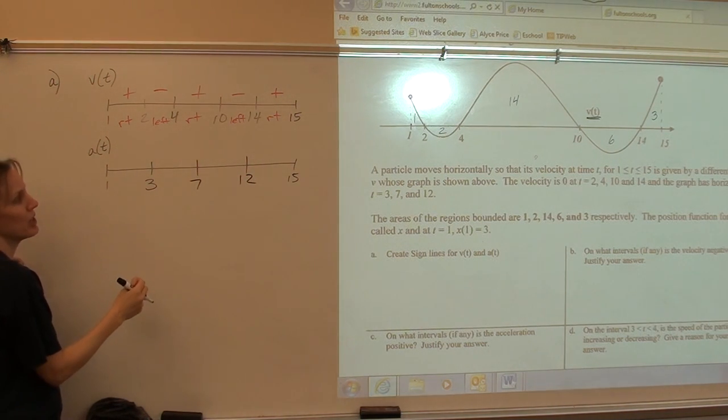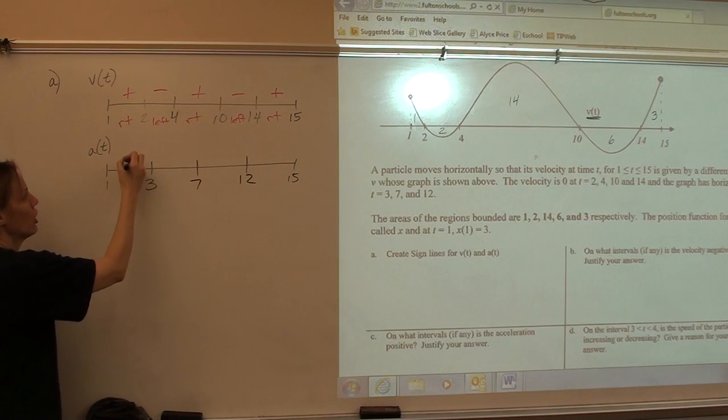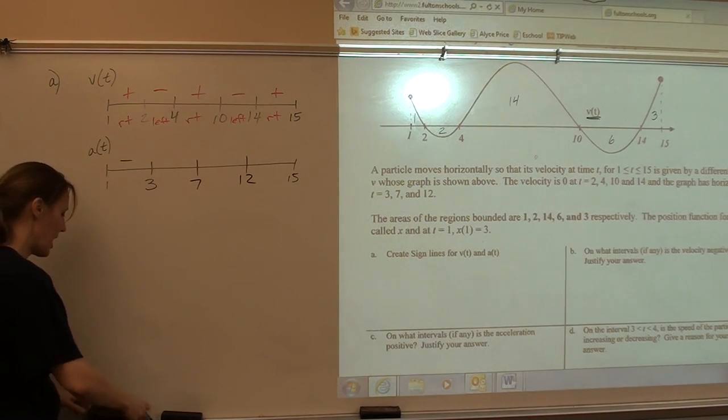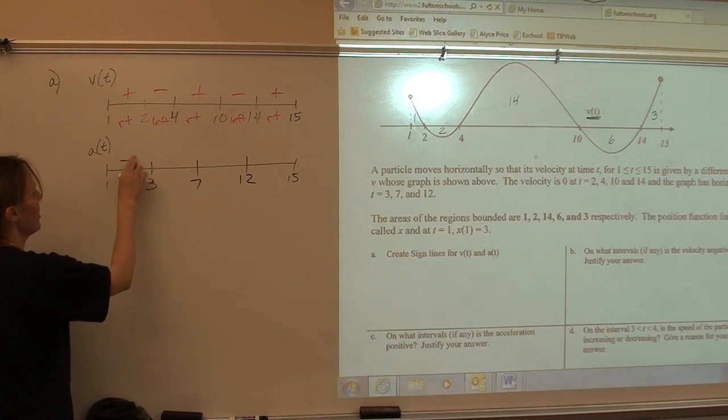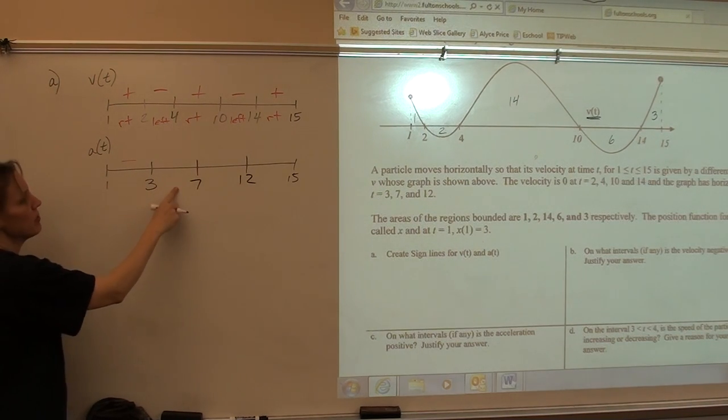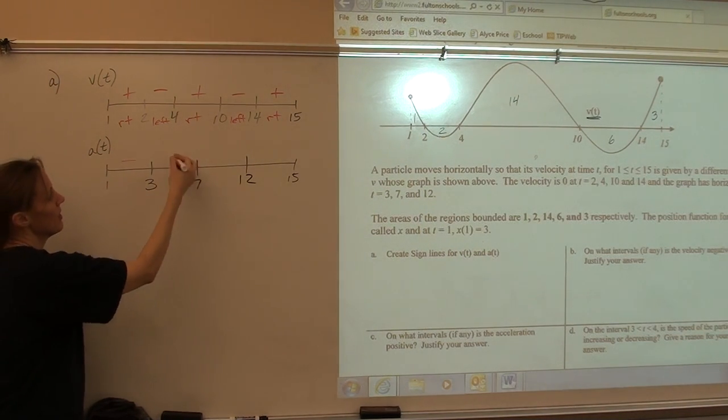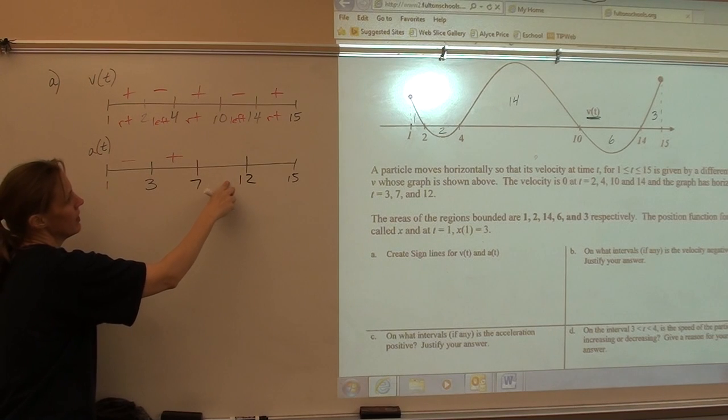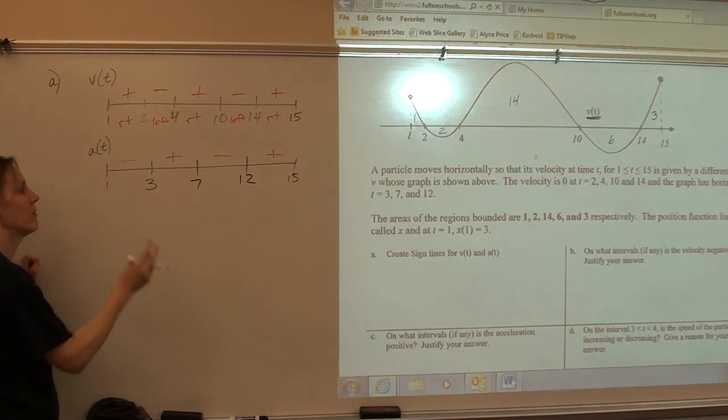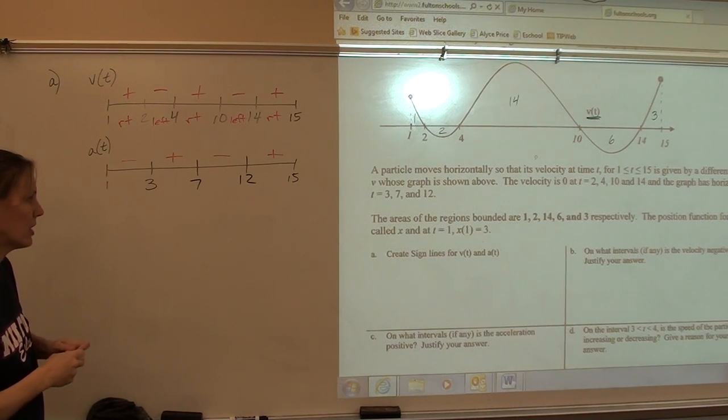From 1 to 3, the acceleration is negative. Why? Because it's decreasing. Because the velocity is decreasing, right? And remember, acceleration is its slope. So if the slope is negative, it's negative. From 3 to 7, the acceleration is positive. 7 to 12, negative. 12 to 15, positive.